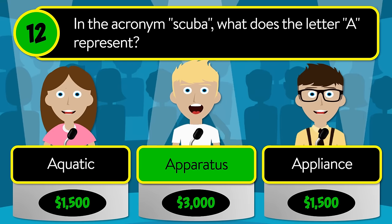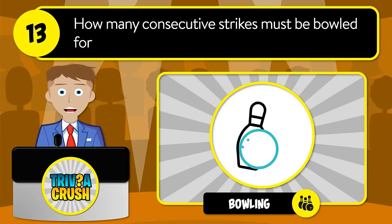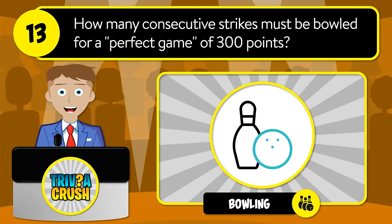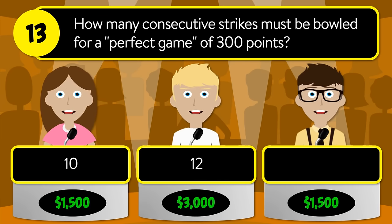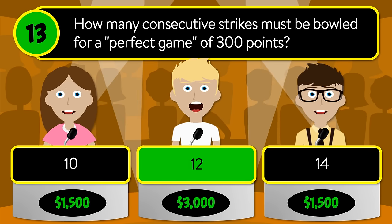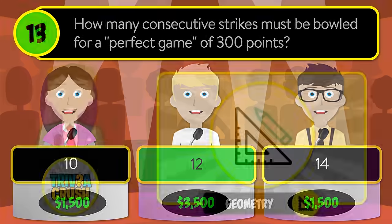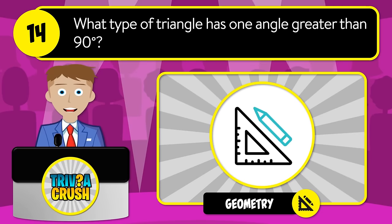The correct answer is apparatus. Question number thirteen: how many consecutive strikes must be bowled for a perfect game of 300 points? Is it 10, 12, or 14? The correct answer is 12.